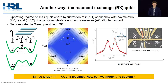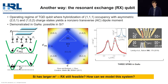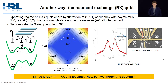It turns out that there is another way to do this in the form of the so-called resonant exchange, or Rx qubit. This is an operating regime of a triple quantum dot qubit where hybridization of the one-one-one occupancy with asymmetric charge states yields a non-zero transverse dipole moment, depicted here as a triangle on a charge stability diagram. The horizontal axis epsilon is the outer detuning — how P1 bias compares to P3 bias.